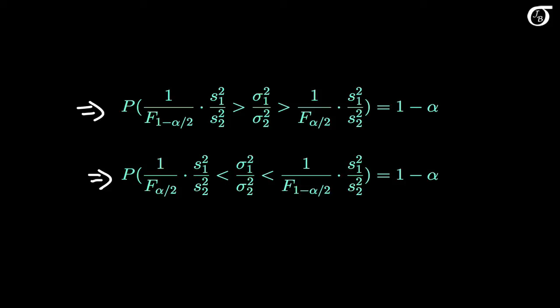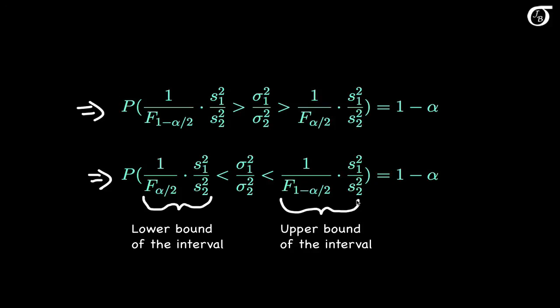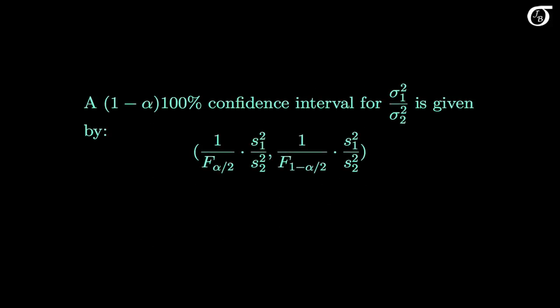When we draw the samples, the sample variances s1 squared and s2 squared will take on values, and we can calculate the quantities on the left and the right. Once we draw the samples, the quantity on the left will be the lower bound of a 1-alpha confidence interval for the ratio of population variances, and the quantity on the right will be the upper bound of the interval. That is why this interval represents a 1-alpha times 100% confidence interval for the ratio of population variances.